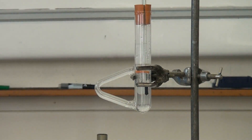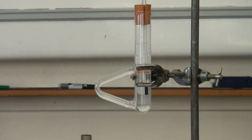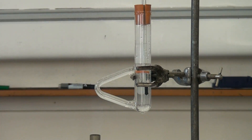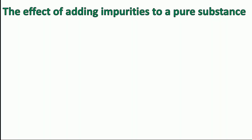We can see it's just beginning to melt now. Most of it has melted but there's still a little bit of solid in there, so I'm moving the Bunsen burner in and out of the side arm to keep the heating really gentle. Now it's completely melted, so at this point I'll read off the melting point from the thermometer.